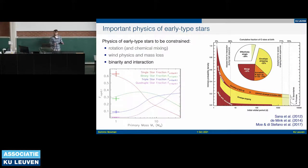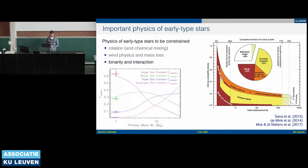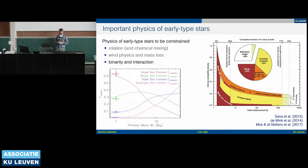Another important factor is binarity. Massive stars are very commonly found in multiple systems — not just the binary fraction but triple, quadruple, and quintuple fractions increasing at higher masses. Work by Professor Uksana has shown that pretty much all O-type stars are in binary or multiple systems, and a significant fraction are in close binary systems that will interact. If you use standard single-star evolution codes without binary physics — mass transfer, the interaction phase — you can only constrain some aspects of a star's properties.